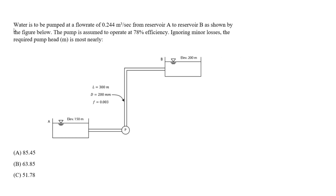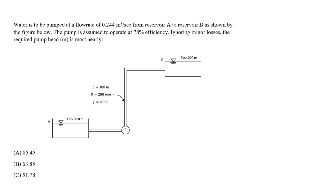Reading the question: water is to be pumped at a flow rate of 0.244 cubic meters per second from Reservoir A to Reservoir B, as shown by the figure below. We're pumping water from Reservoir A to Reservoir B using a pump. The pump is assumed to operate at 78% efficiency. Ignoring minor losses, the required pump head in meters is most nearly what? We want to find the required pump head H_p.